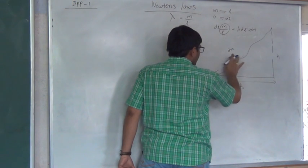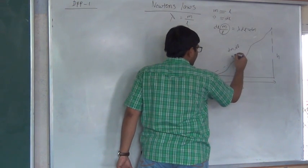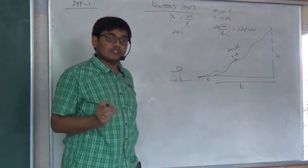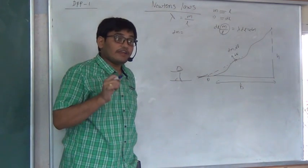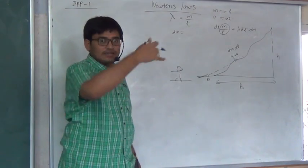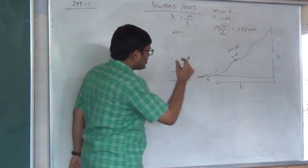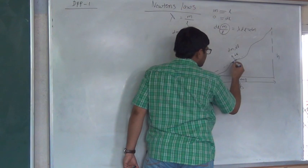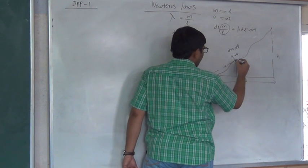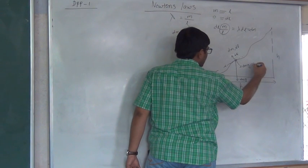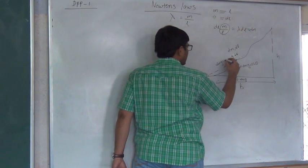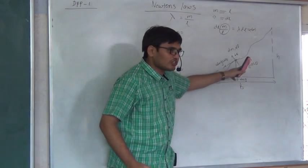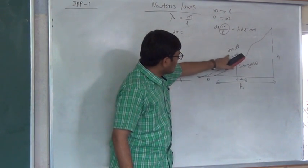The contact force on the differential element is dN. The gravitational component along the normal direction is dM·g·cosθ. For an inertial observer this element has no motion in the normal direction, so by Newton's second law: dN equals dM·g·cosθ. This is analogous to a mass on an inclined plane of angle theta.